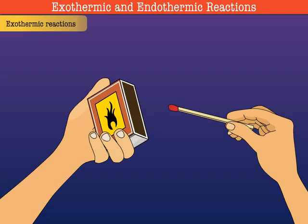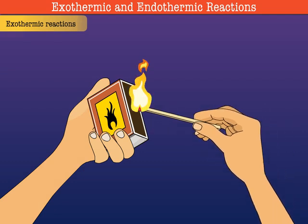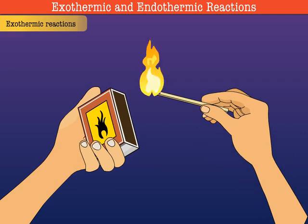Let us look at a few examples of exothermic reactions. Take a matchbox and strike the matchstick on its side. The matchstick burns, giving out a lot of heat.